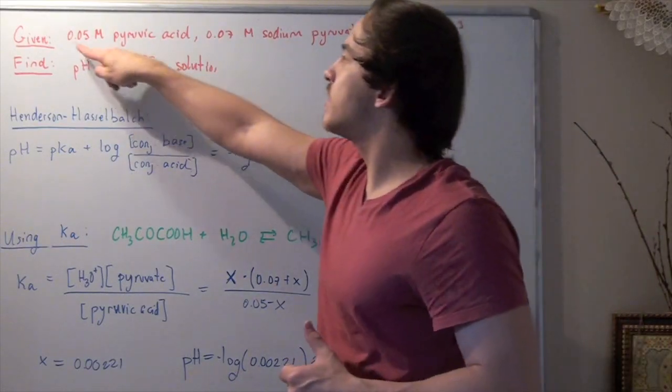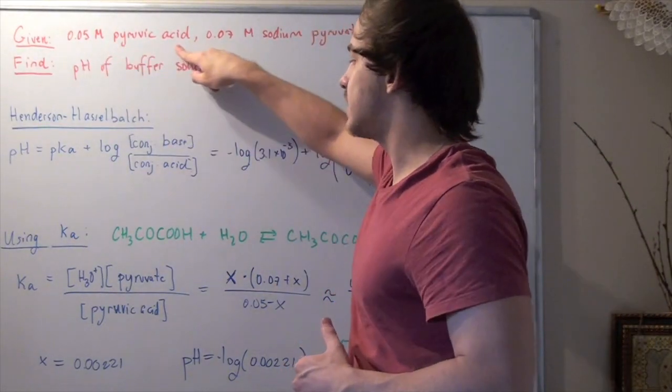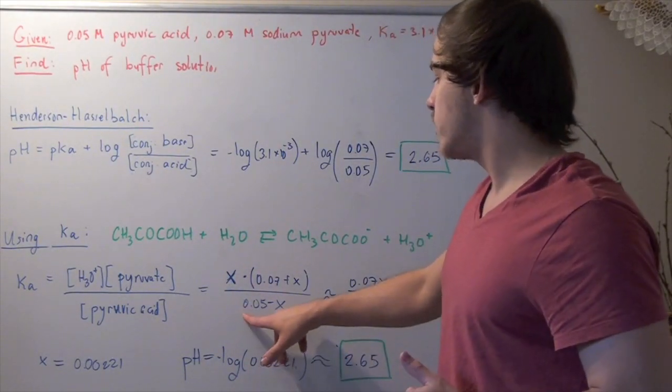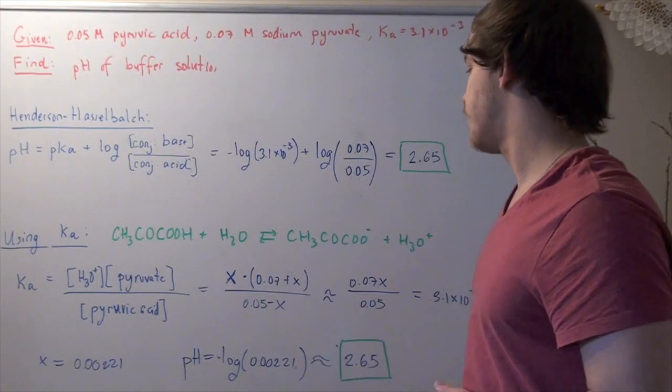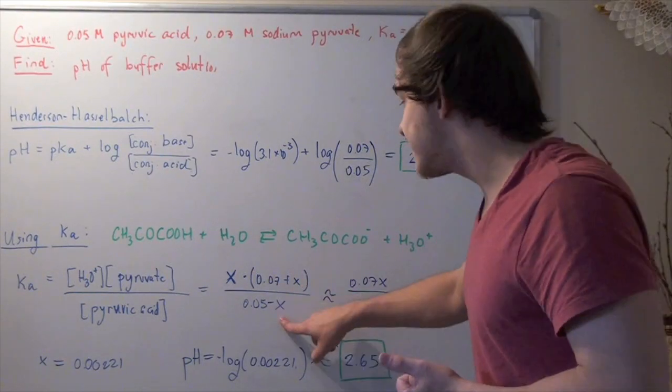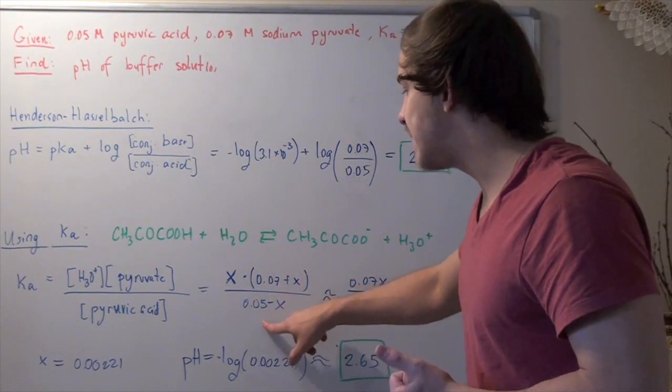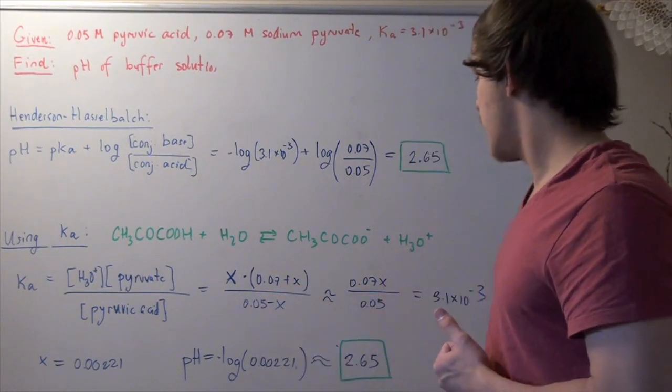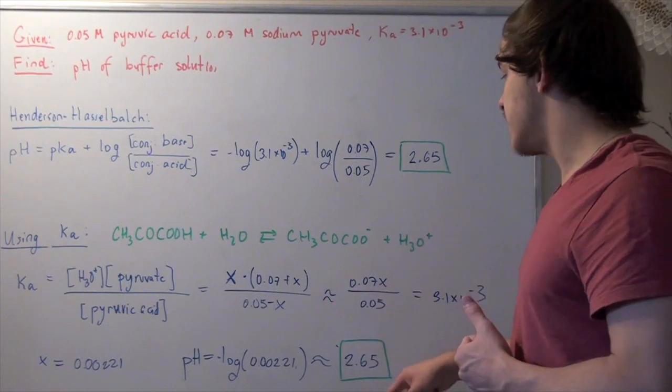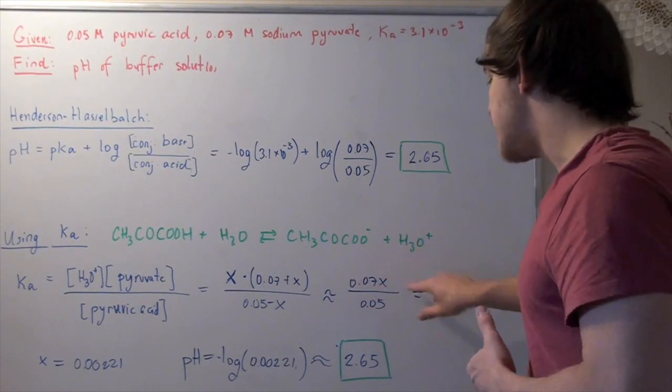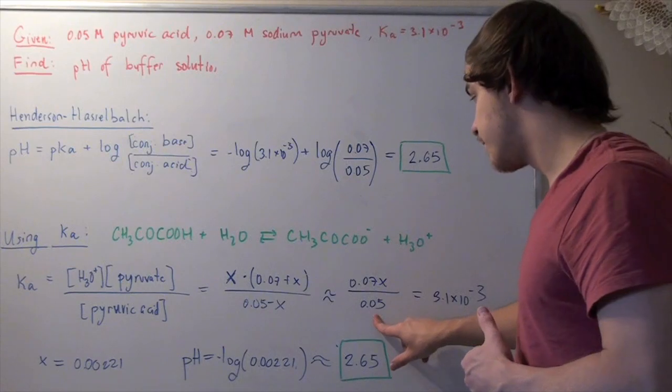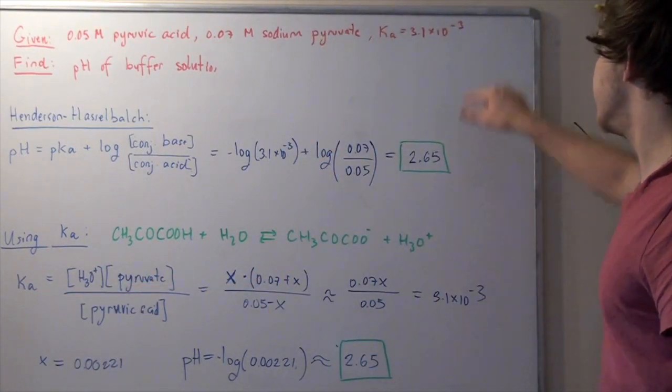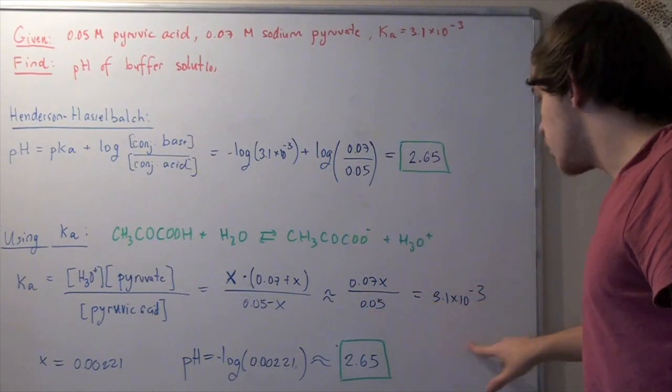Since we begin with 0.05 molar pyruvic acid and some dissociates, we write it as 0.05 minus x. Now, since x is much smaller than 0.07 or 0.05, we approximate this to be 0.07x divided by 0.05 equals our Ka, 3.1 times 10 to the negative 3. We multiply by 0.05, then divide by 0.07, and we get x equals 0.00221.